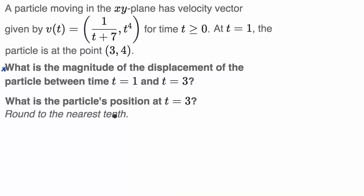Pause the video and try to work through it on your own. We've done questions like this in one dimension, but now we're doing it in two dimensions. The key is to break it up into component dimensions — find the displacement in the x direction and the displacement in the y direction, then use the Pythagorean theorem to find the magnitude of the total displacement.